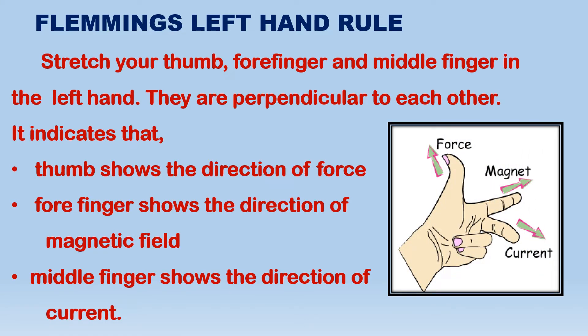Observe the diagram — the three fingers are in three directions. The magnetic field, current direction: stretch your thumb, forefinger and middle finger so that all three are perpendicular to each other. The thumb shows the direction of force, the forefinger shows the direction of magnetic field, and the middle finger shows the direction of current.